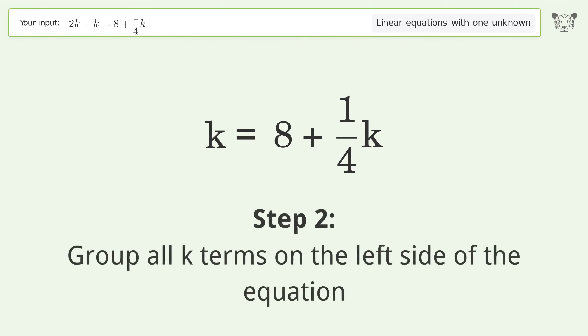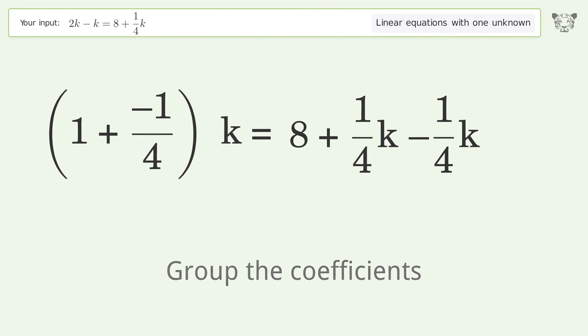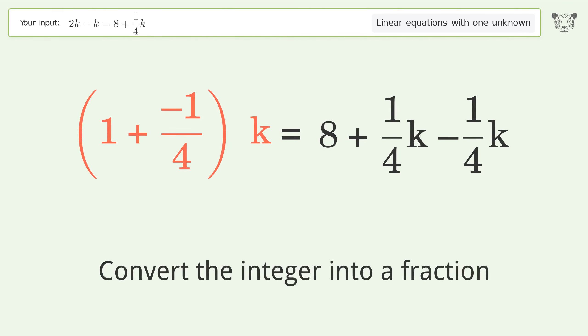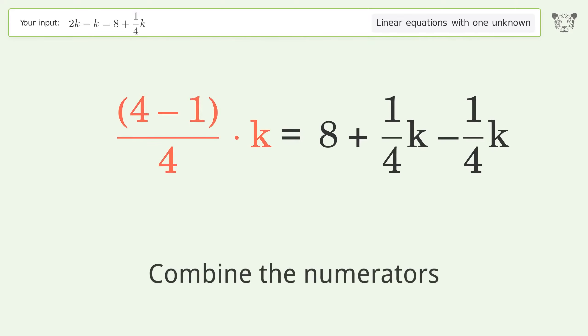Group all k terms on the left side of the equation. Subtract 1 over 4k from both sides. Group the coefficients, convert the integer into a fraction, combine the fractions, and combine the numerators.